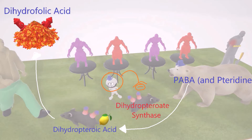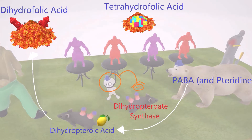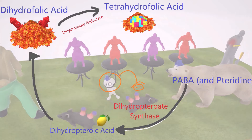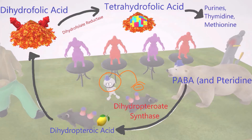Dihydrofolic acid is then converted to tetrahydrofolic acid, represented by Tetris pieces in a pile of foliage, through the enzyme dihydrofolate reductase — which makes sense, as it is reducing dihydrofolic acid. Tetrahydrofolic acid then goes on to form purines, thymidine, and methionine, which are important for DNA, RNA, and protein synthesis. This shows how sulfonamides inhibit folate synthesis by blocking dihydropteroate synthase.